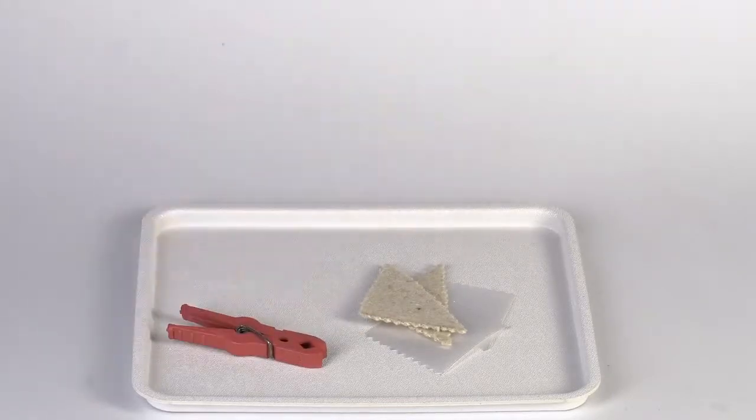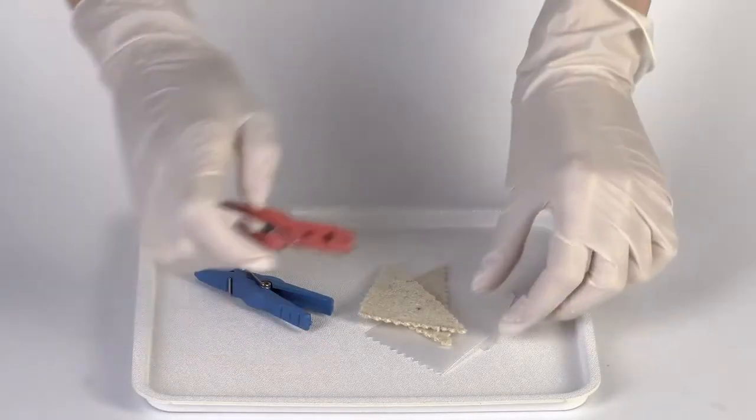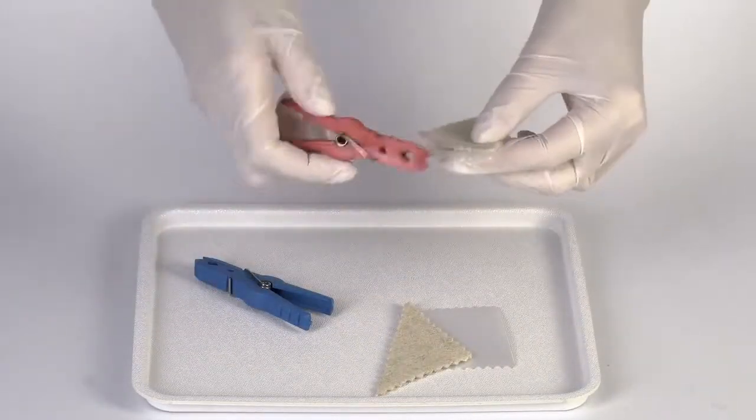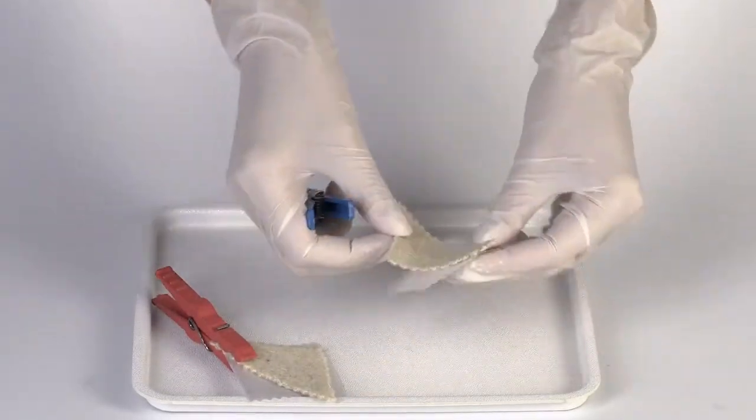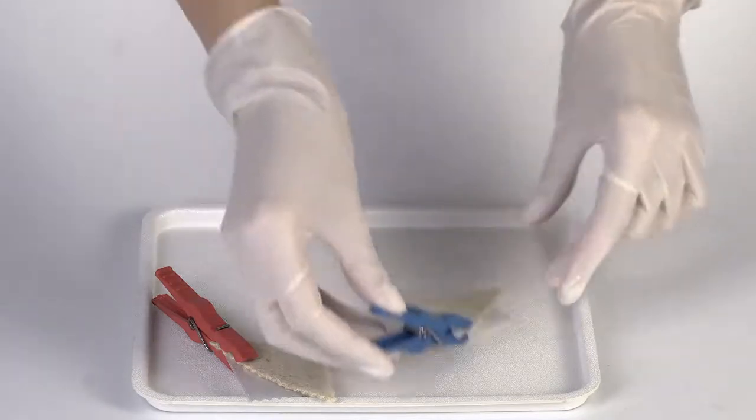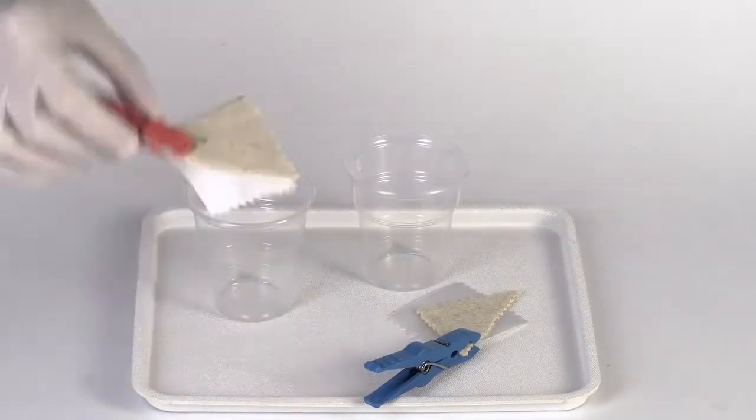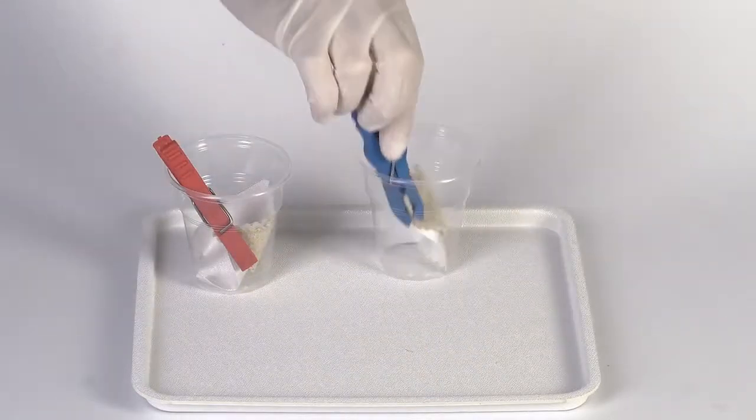Take the clothespins from the set. Clip together one piece of wool and one piece of polyester with the red clothespin. Do the same with the blue clothespin. In each pin, you should have two pieces of different fabric. Take two plastic cups from the starter kit and put the samples into the cups.